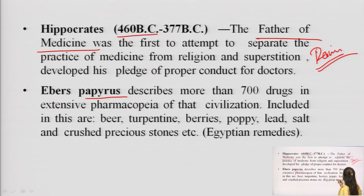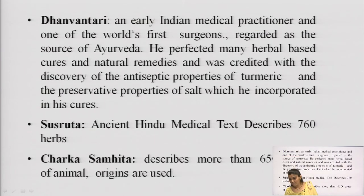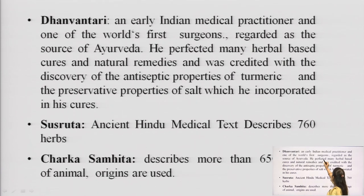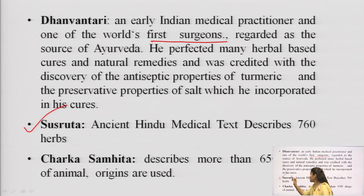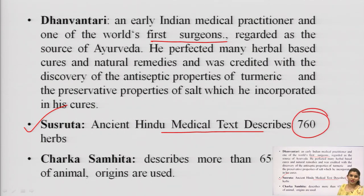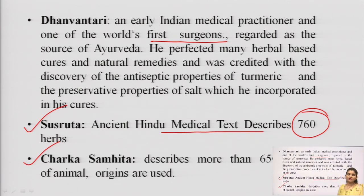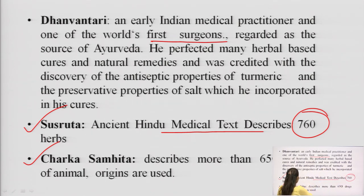Abbas Papyrus invented 700 drugs and started their use in civilized form. After that, we have Indian scientists and Indian books where descriptions of drugs are found. For example, Dhanvantari — famous in India as the god of surgery — was the first to perform surgery. We also have the book Sushruta, which is a Hindu medical textbook containing descriptions of 760 herbs. These are our ancient books providing drug descriptions from before modern pharmacology. Charak Samhita contains the study of 650 drugs.